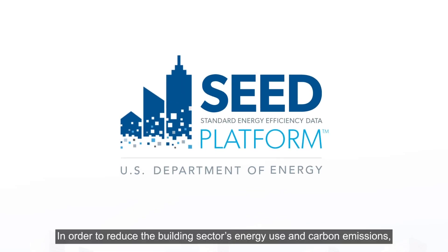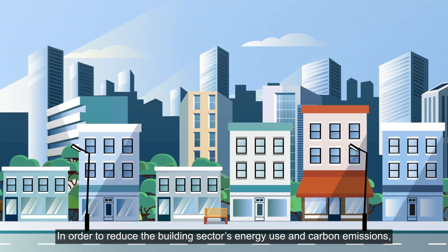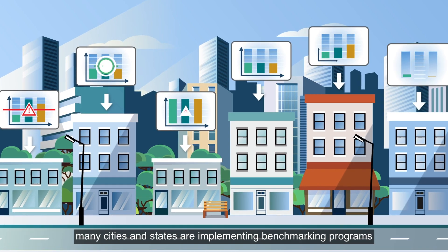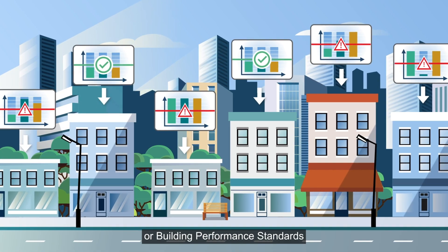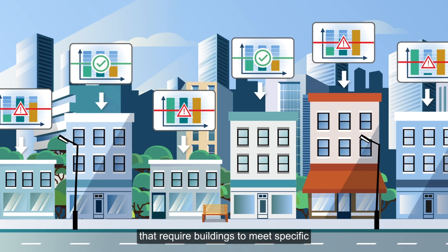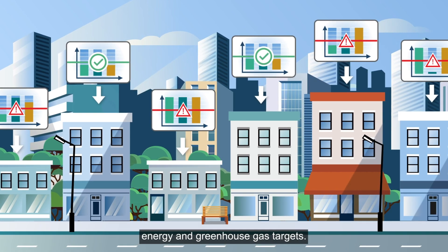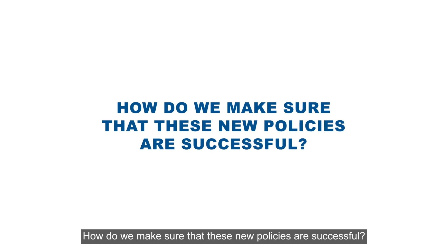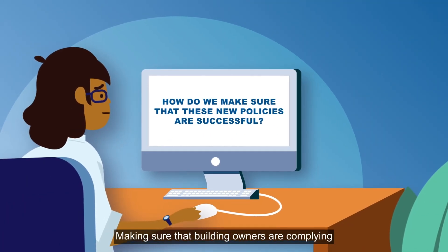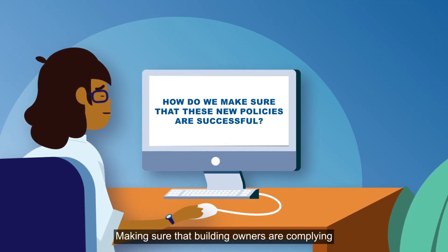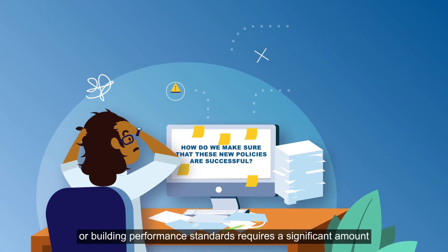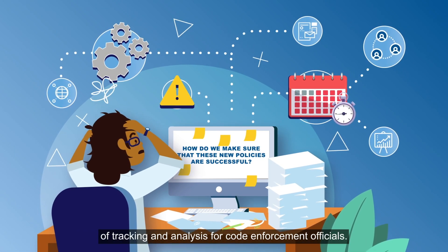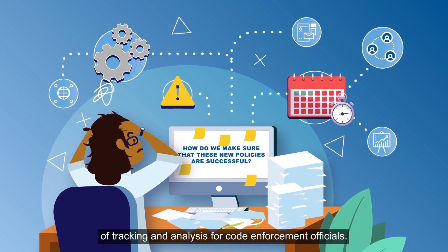In order to reduce the building sector's energy use and carbon emissions, many cities and states are implementing benchmarking programs or building performance standards that require buildings to meet specific energy and greenhouse gas targets. Making sure that building owners are complying with benchmarking requirements or building performance standards requires a significant amount of tracking and analysis for code enforcement officials.